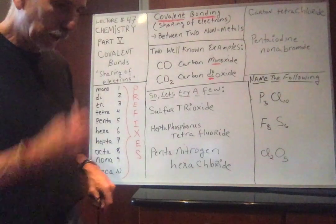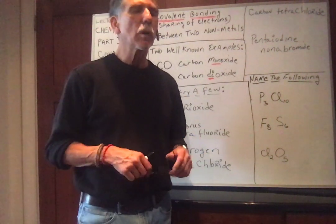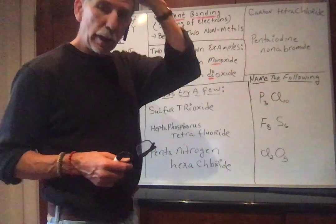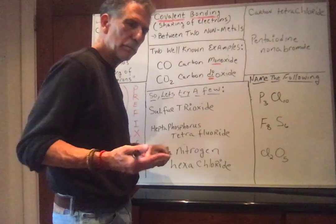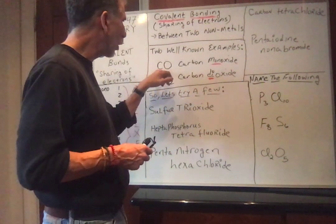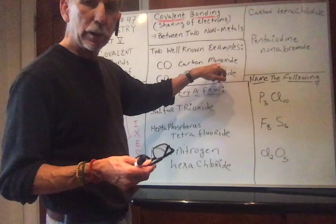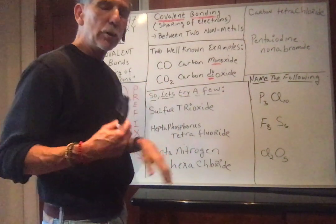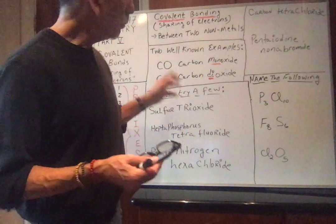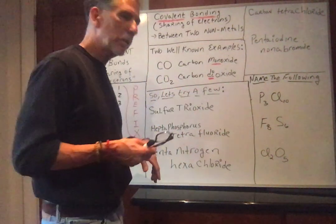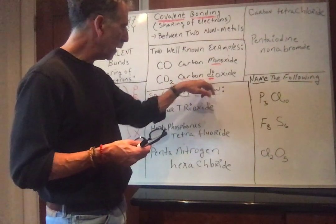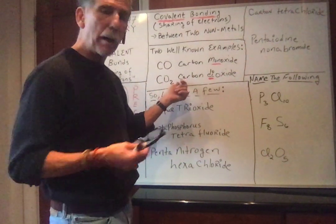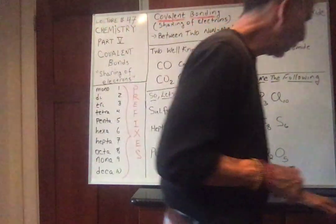Naming covalent bonds is actually very, very simple, and I want to show you two well-known examples. One is carbon monoxide — there's one oxygen, so monoxide. You could say monocarbon monoxide, but the mono in front of the first element is not written if it's just one. Here we have carbon dioxide — di, because there's two oxygens. The mono in front of carbon is traditionally not said.